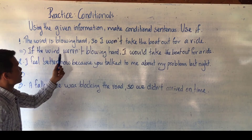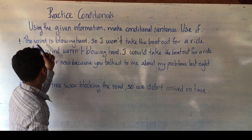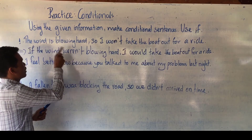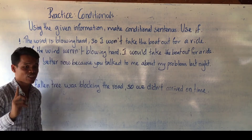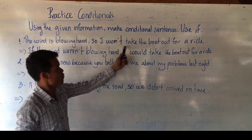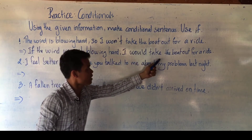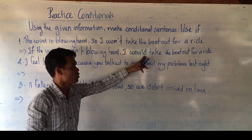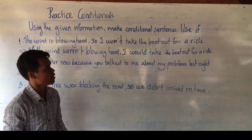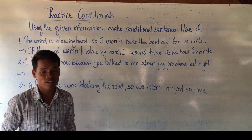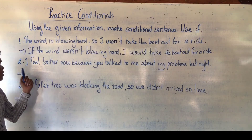If the wind were not blowing hard, I would take the boat out for a ride. Do you think the wind is not blowing hard now? No — it is blowing hard. So it is contrary to fact. I would take the boat out for a ride — but when you use this sentence, do you think you will actually be able to take the boat out? No, impossible. So it is contrary to fact, and it is second conditional.